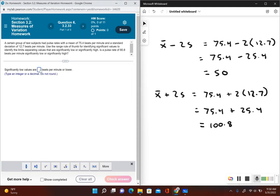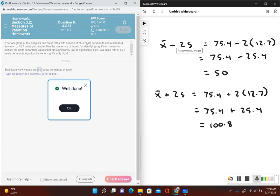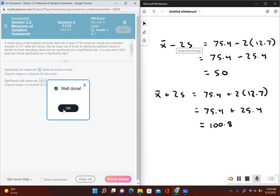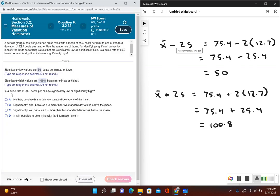Let's put our answers in. We have 50 for significantly low values, so 50 and lower are significantly low, and then significantly high values, you have 100.8.